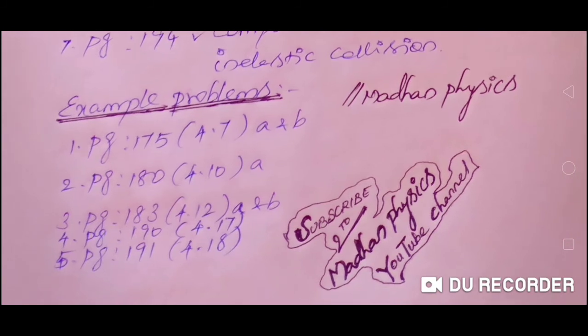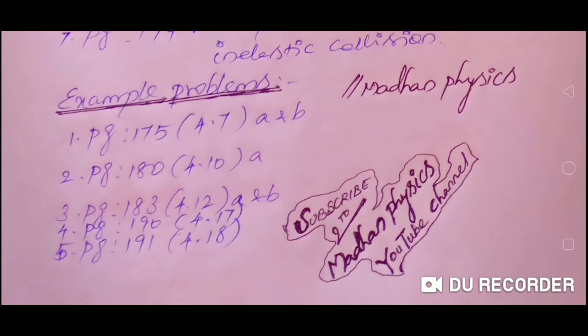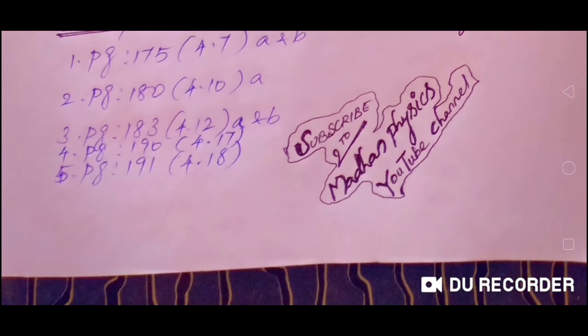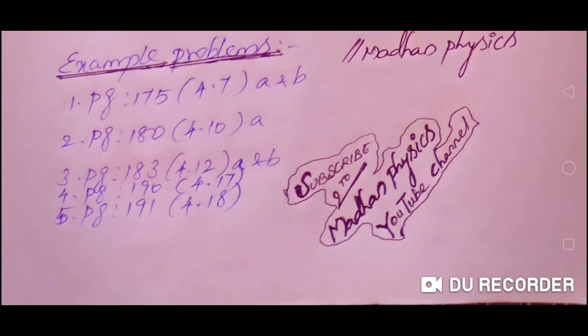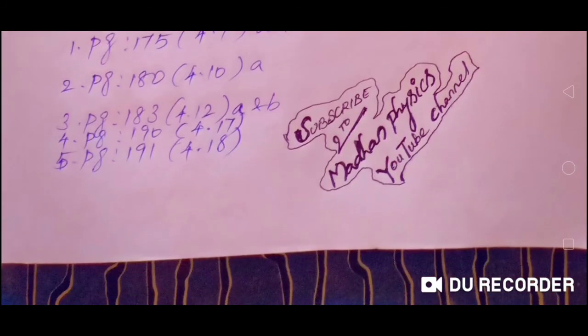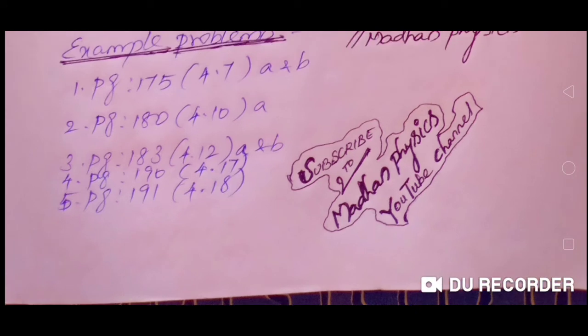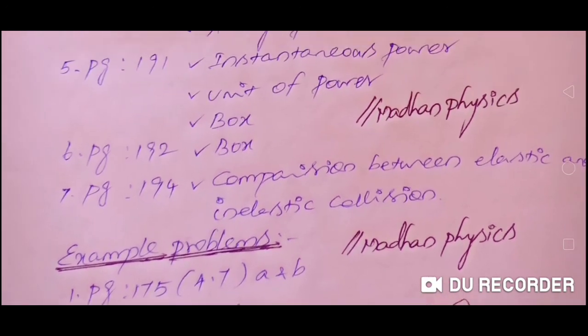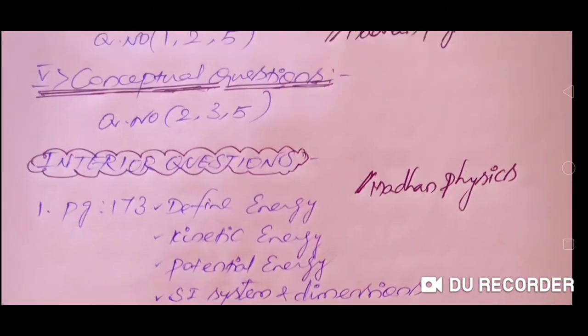Important example problems: page 175, question 4.7 A and B; page 180, question 4.10 A; page 183, question 4.12 A and B; page 190, question 4.17; page 191, question 4.18. These are the very important interior questions in fourth lesson, fourth unit Work, Energy, Power.